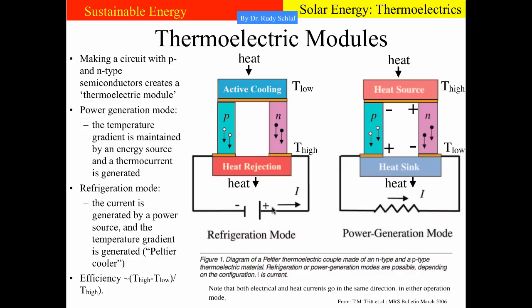It's interesting to note that this device can be reverse operated. If we provide a current with a power source such as a battery, the ends of the thermoelectric module will establish the same heat gradient that was present in the power generation mode. This can be used as an active cooling device — we put whatever we want to cool in contact with one end, and heat will be absorbed, transported through the device, and rejected on the formerly cold end.